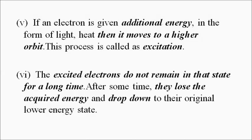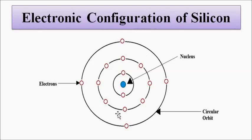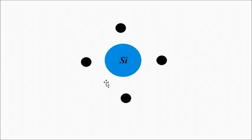If we want to study silicon, the most popular semiconductor used in the electronic industry, it has an atomic number of 14. Its electronic configuration is: two electrons in the innermost orbit close to the nucleus, eight electrons in the next orbit, and four valence electrons in the outermost orbit. These four valence electrons are very important when it comes to the formation of the silicon semiconductor.